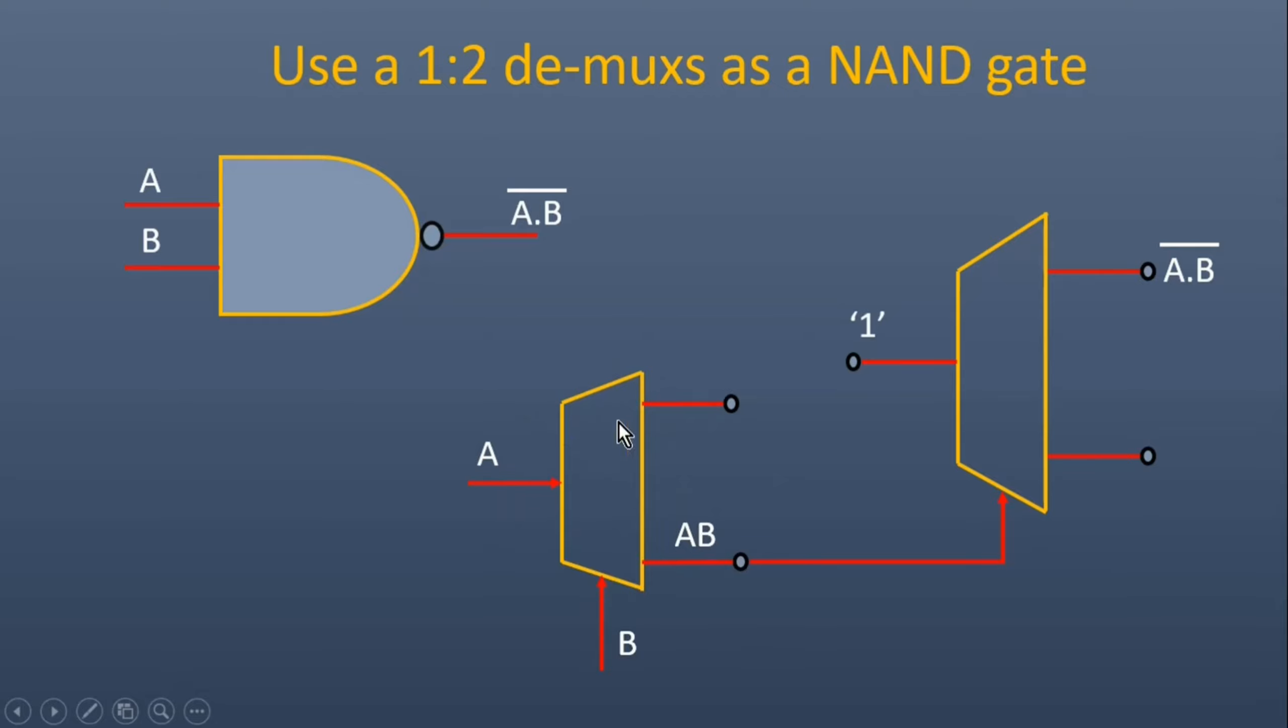This is the implementation where we apply A at the input I and B at the select line. We get A into B at the output of the first demultiplexer. Now we simply need to invert it and we will get the desired circuitry.